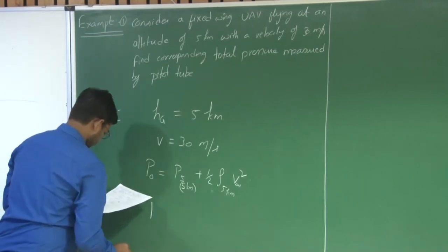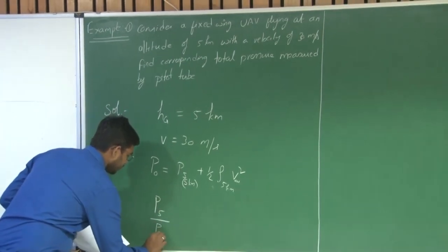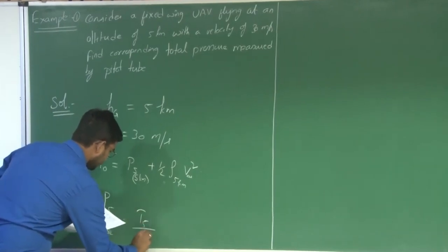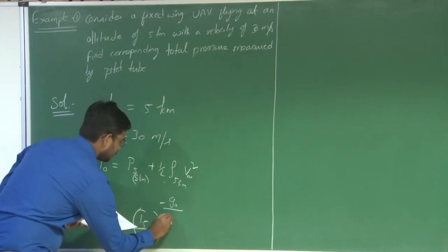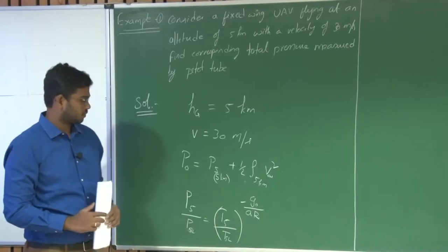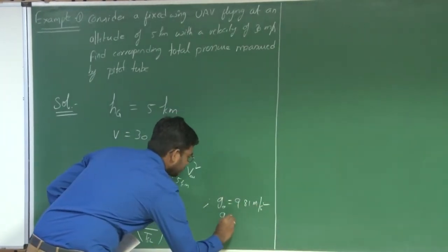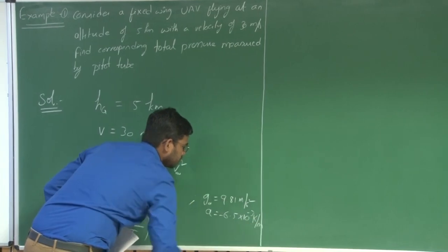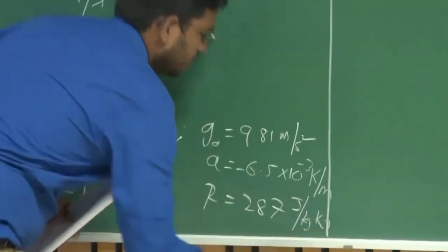What we have is: P at 5 kilometers divided by P at sea level equals T at 5 kilometers divided by T at sea level, raised to the power of minus G_0 divided by A times r. This is the relationship between pressure and temperature at different altitudes, where G_0 is 9.81 m/s², A is minus 6.5 × 10⁻³ Kelvin per meter, and r is 287 joule per kg·Kelvin.